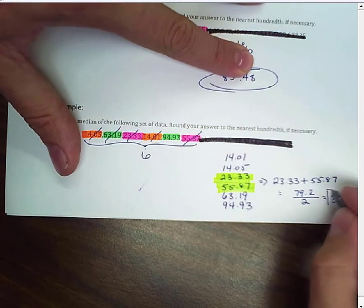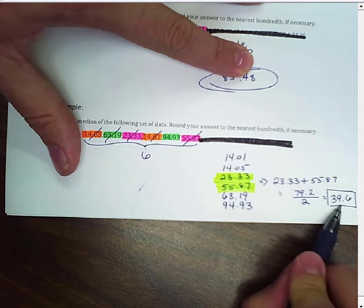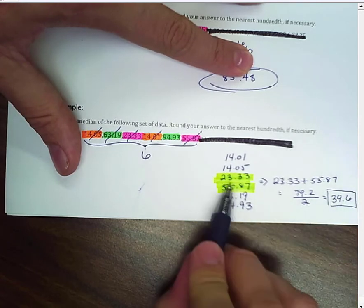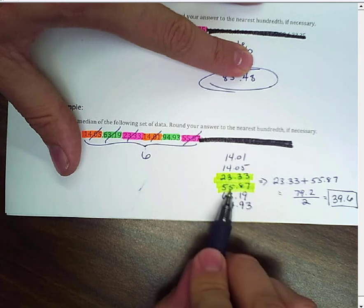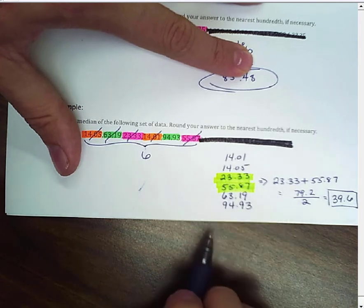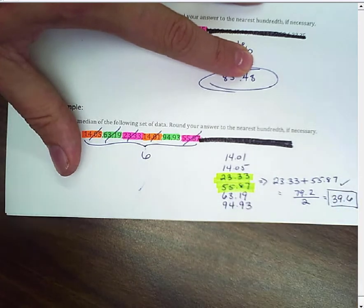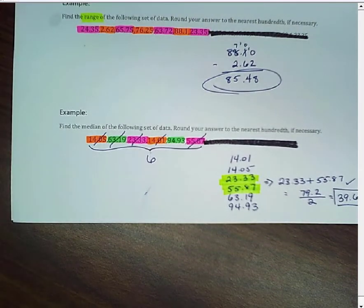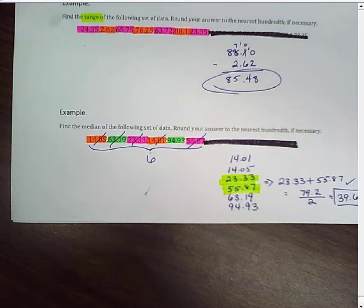This is pretty easy to check, guys. Does 39.6 fall between 23.33 and 55.87? In this case, it does. So, I know that's just kind of a cursory check that I'm okay. As always, email me if you have any questions at all.